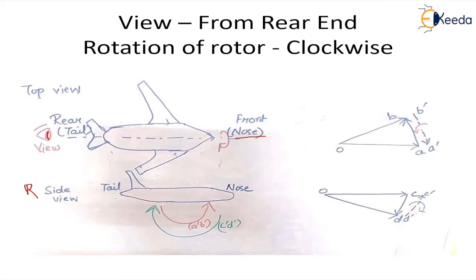To understand the whole concept, there are a few things we need to know: the vector diagrams for angular velocity, plus the right-hand screw rule. These two fundamentals will help us in determining the turn effect in all the cases.